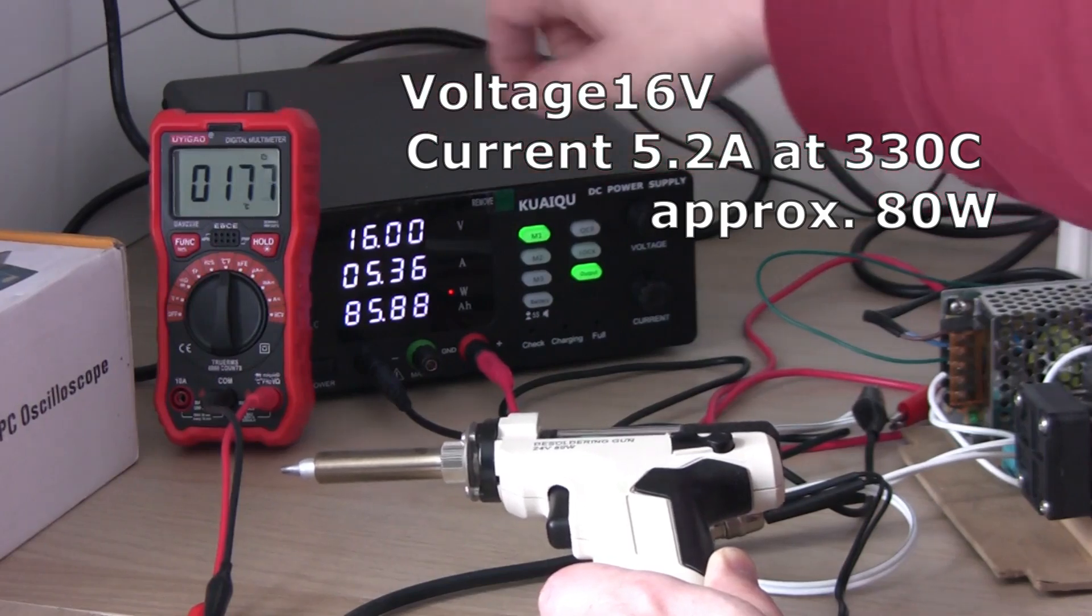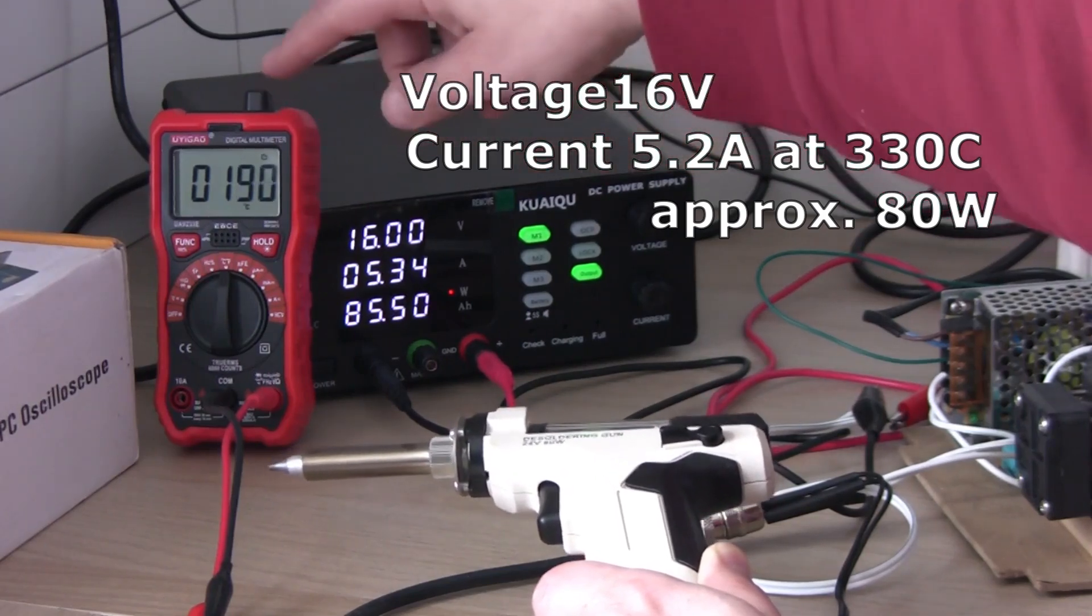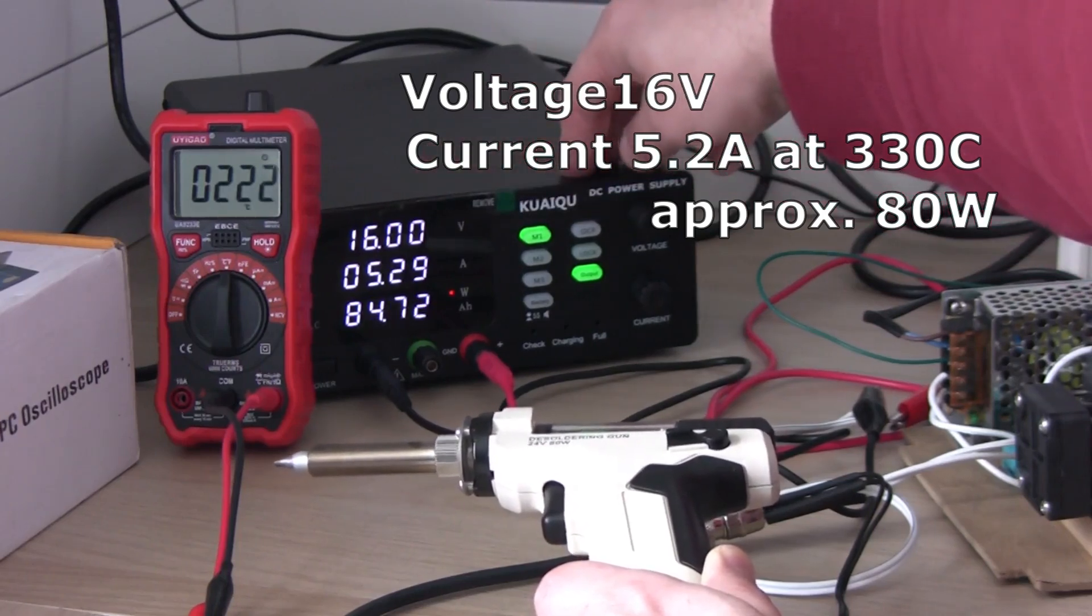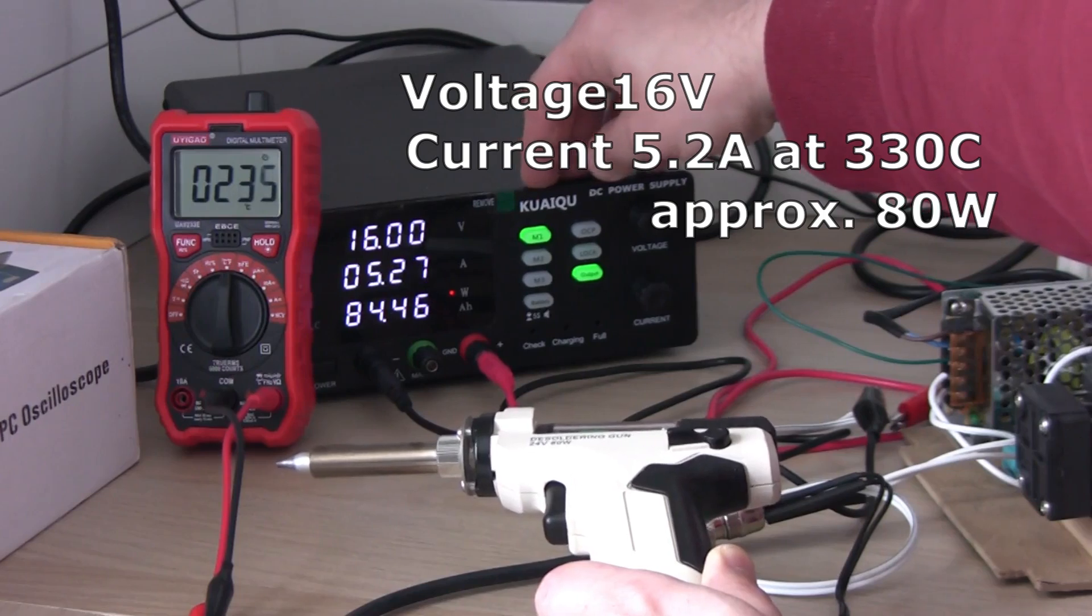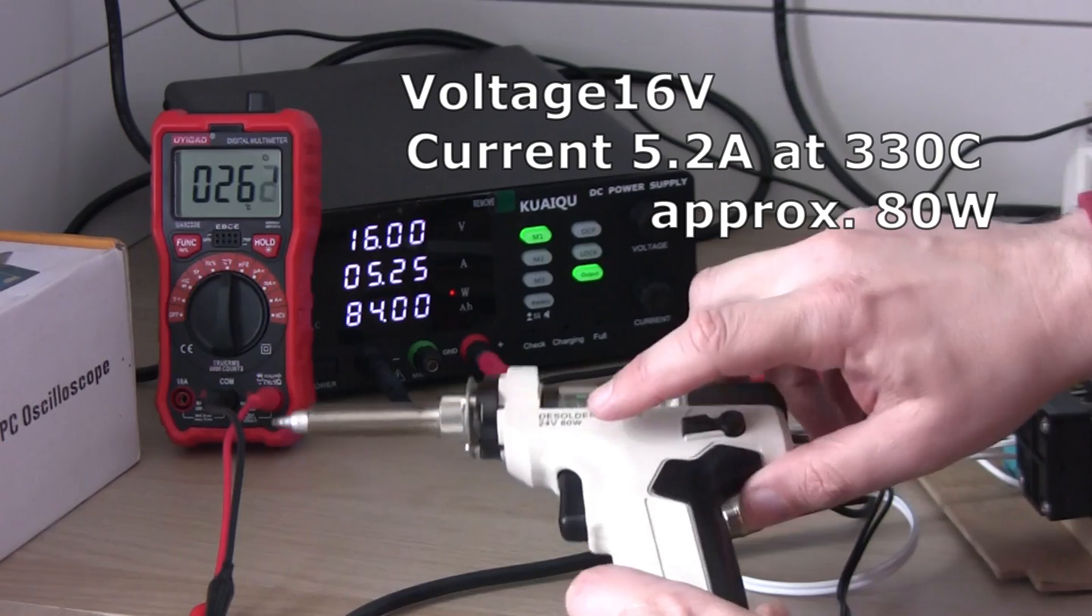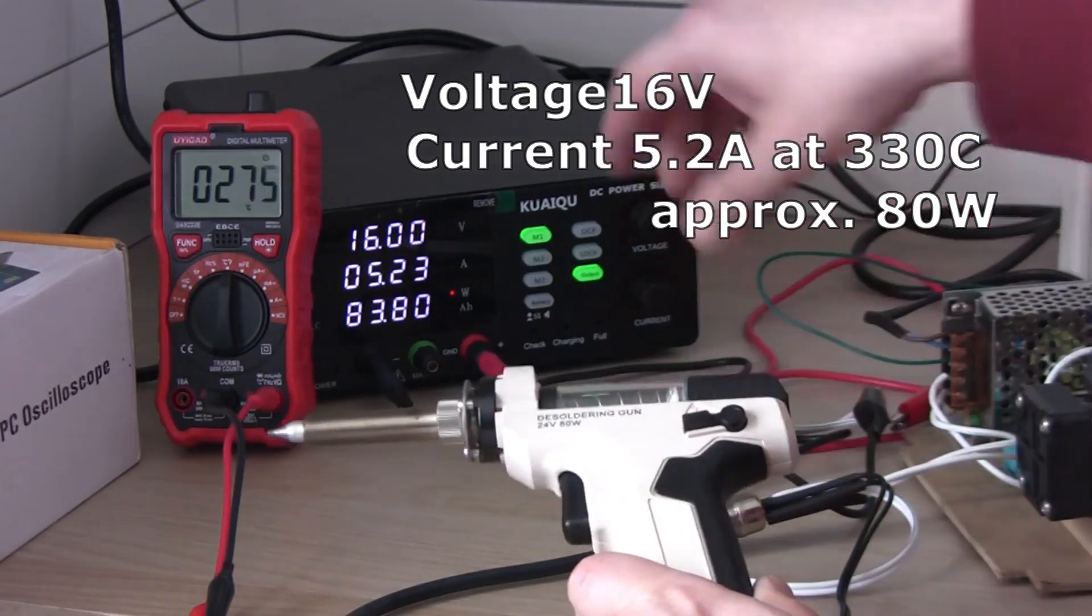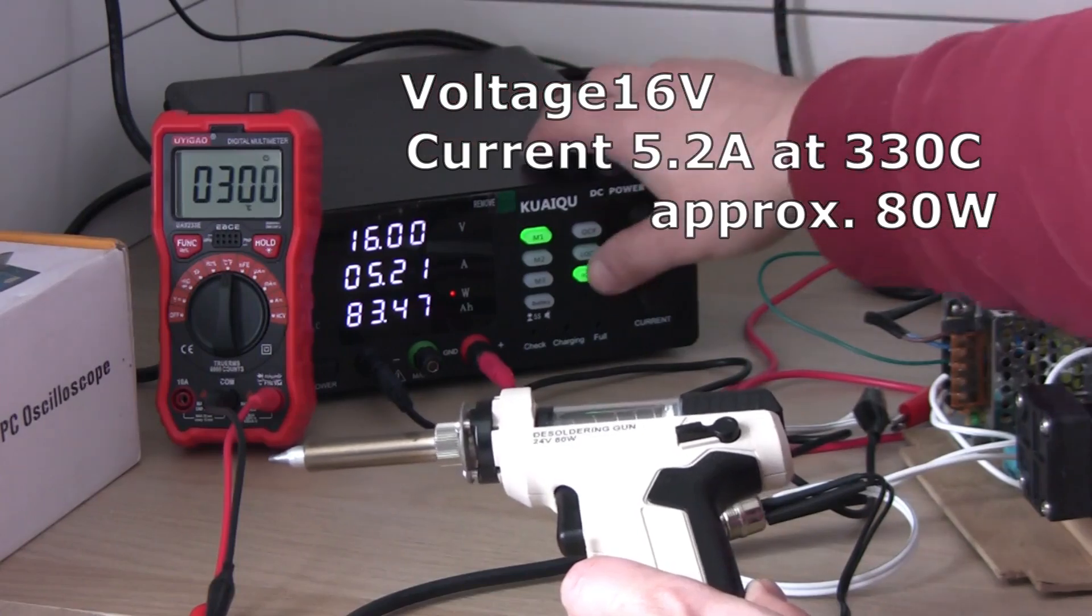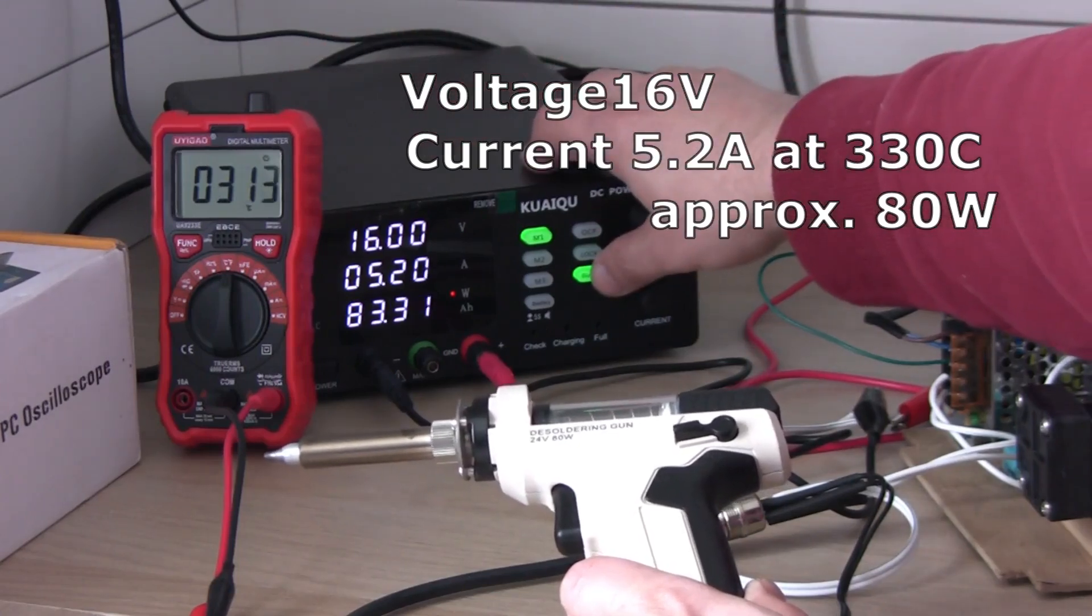As you can see, the temperature raises definitely slower than it was with 18 volts. It's going up nicely still. And we are reaching approximately the temperature that is declared on the gun itself as it heats up to 330.